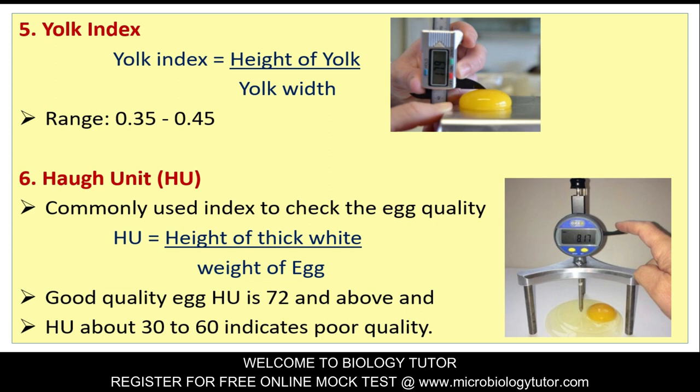Haugh Unit (HU): HU is a commonly used index to check egg quality. It is calculated as the height of the thick white divided by the weight of egg. Good quality egg has an HU of 72 and above. An HU of about 30 to 60 indicates poor quality of the egg.